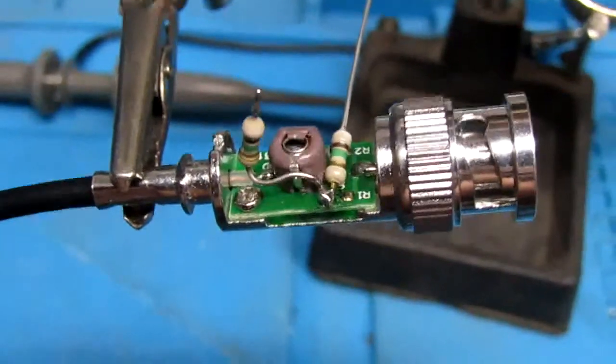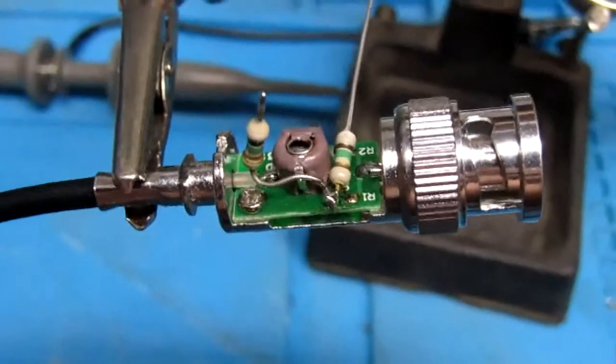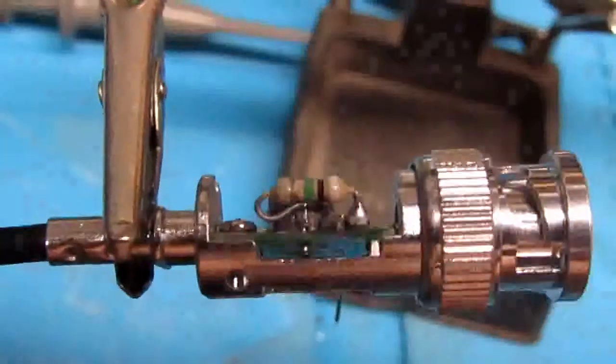The reason we have to do this way is because of the space limitations on the sleeve that slides over the trimmer. Okay, second resistor is soldered down.